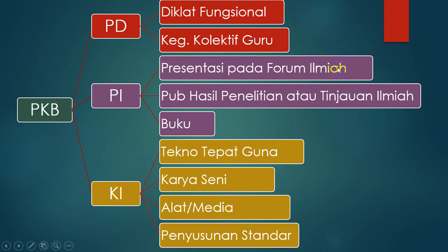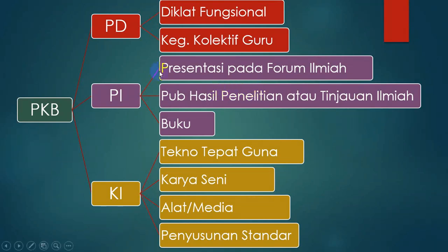Publikasi ilmiah ada tiga jenis. Yang pertama adalah presentasi pada forum ilmiah, yaitu sebagai pemakalah atau penyaji di seminar, kolokium, sarasian, simposium, dan lain sebagainya. Yang kedua adalah publikasi hasil penelitian atau tinjauan ilmiah. Ini ada dua macam: hasil penelitian atau non hasil penelitian.